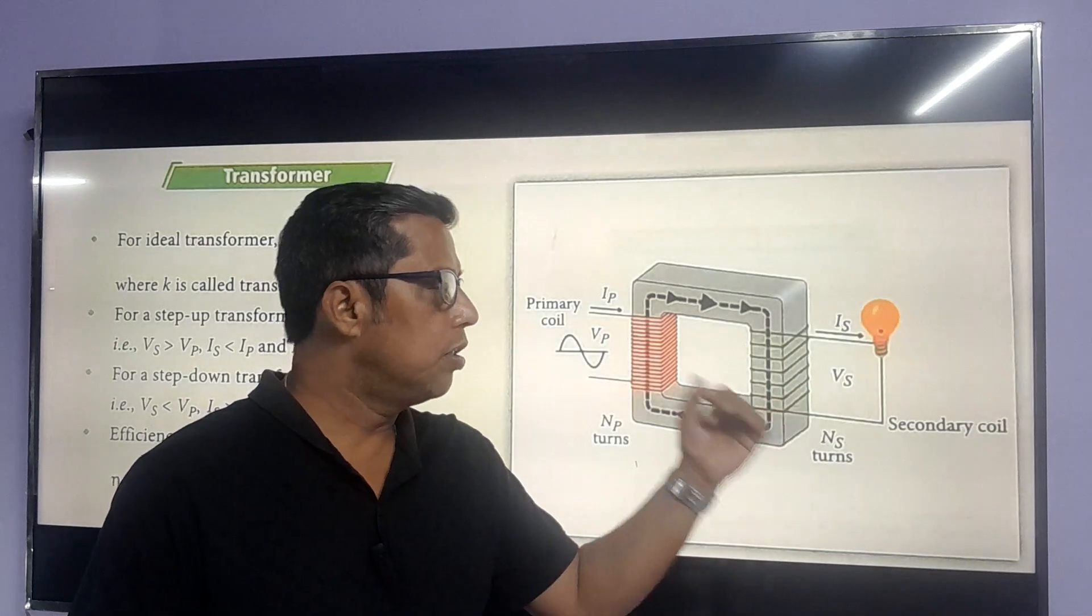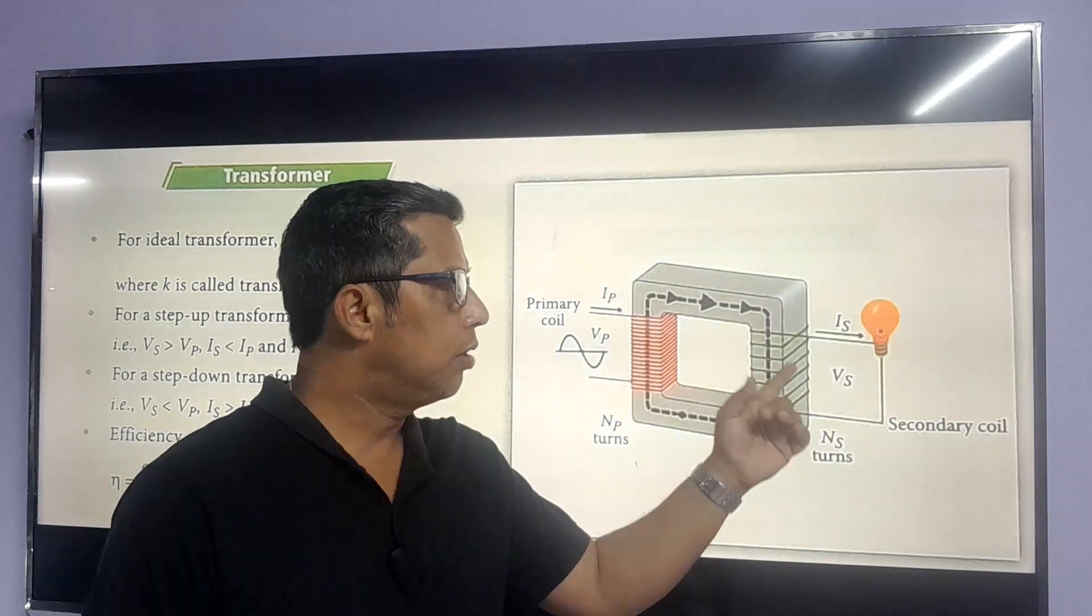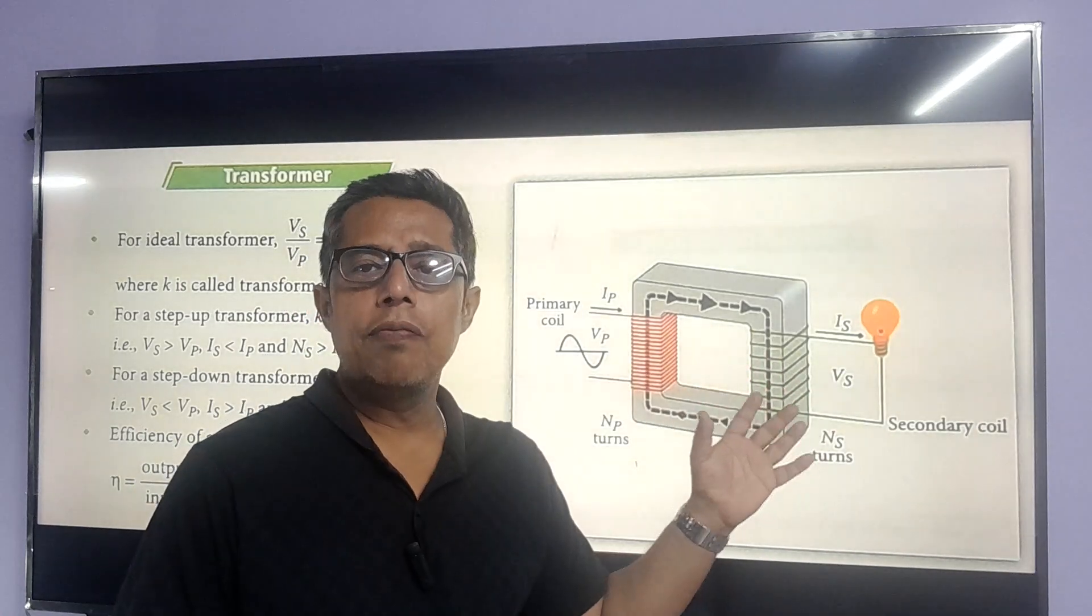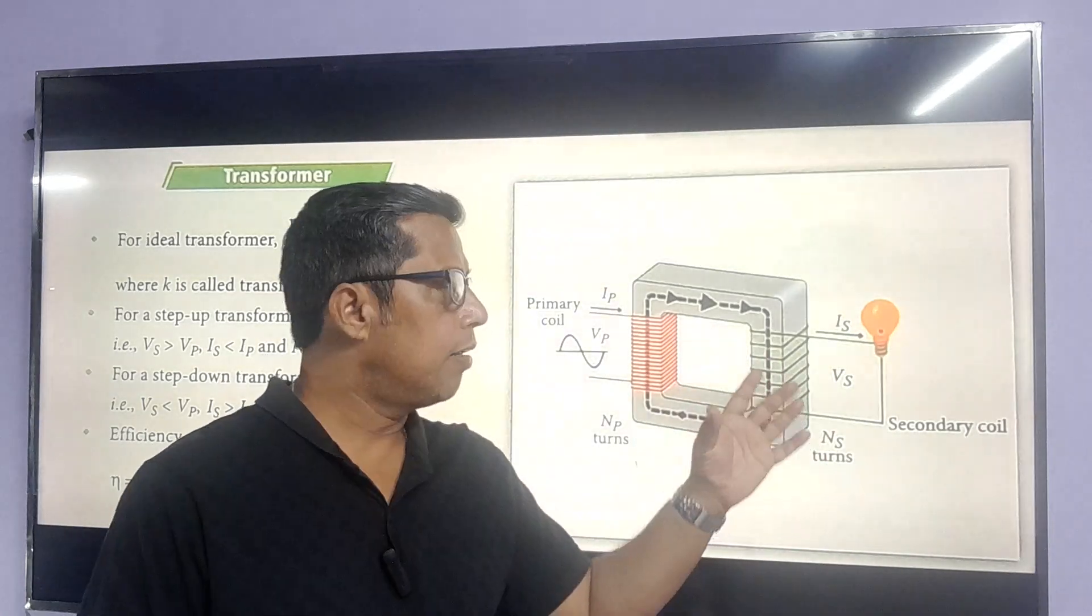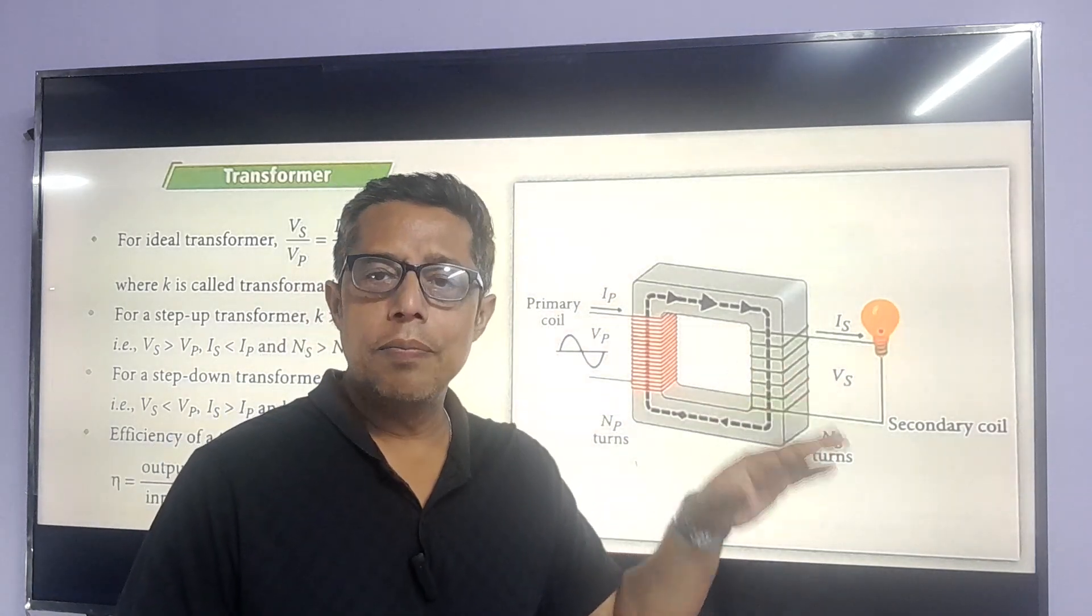Change in magnetic flux caused in the secondary coil due to the current in the primary coil will induce EMF in the secondary coil. The secondary coil is used for stepping up the voltage or stepping down the voltage.